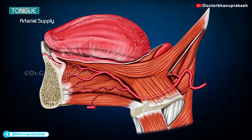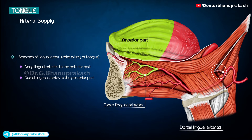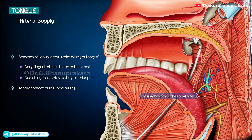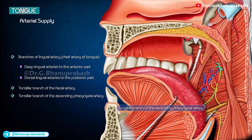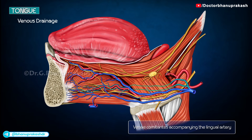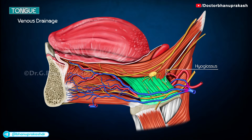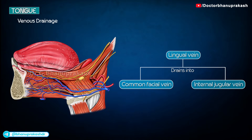The tongue is supplied by branches of the lingual artery, which is the chief artery — the deep lingual arteries to the anterior part and the dorsal lingual arteries to the posterior part — as well as the tonsillar branch of the facial artery and the tonsillar branch of the ascending pharyngeal artery. Venous drainage is via the deep lingual vein, visible on the inferior surface near the median plane; venae comitantes accompanying the lingual artery, joined by the dorsal lingual veins; and venae comitantes accompanying the hypoglossal nerve. These veins unite at the posterior border of hyoglossus to form the lingual vein, draining into the common facial vein or internal jugular vein.